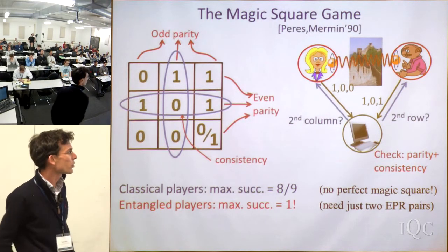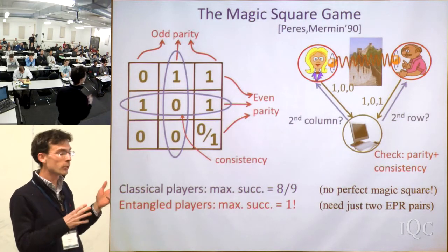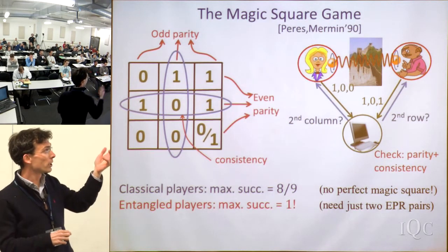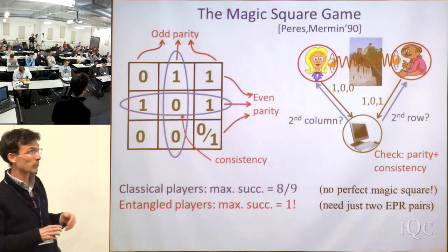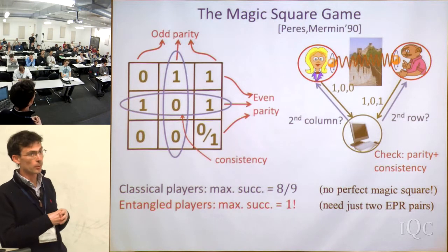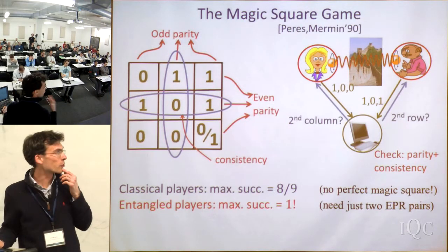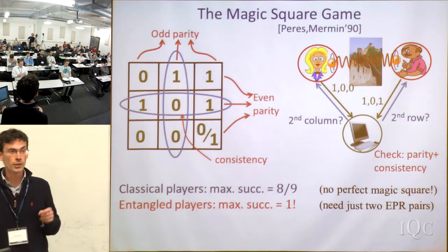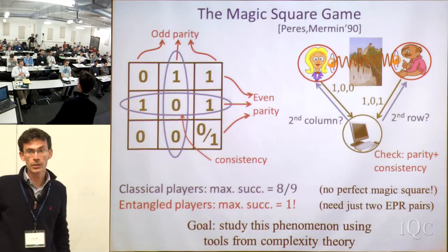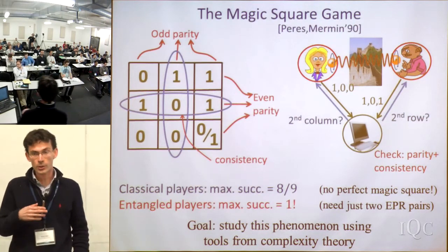So why is it interesting? We have this quantum strategy that succeeds with probability one, but we know it's impossible to consistently assign answers to every possible question simultaneously that would satisfy all constraints. This strategy still convinces the referee with success probability one, which means this quantum strategy has a non-local flavor: it's able to answer any pair of questions with probability one, but you can't transform it into an assignment of answers to all possible questions simultaneously. This is quantum mechanics being non-local — you can phrase this as a violation of a Bell inequality.